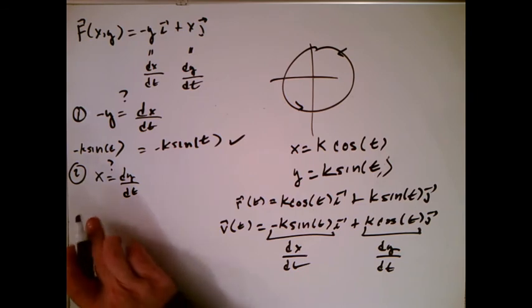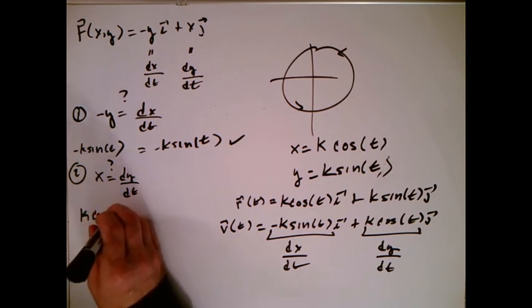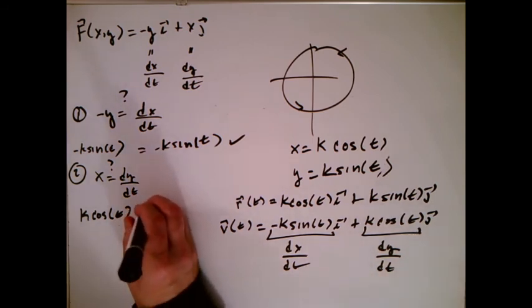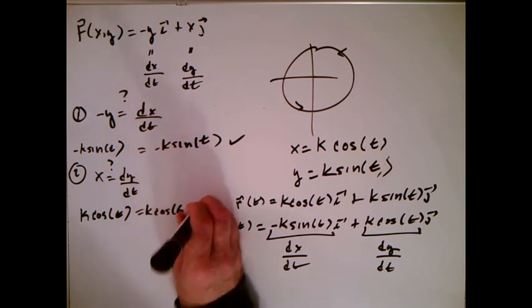x, for our parameterization, is k cosine t. So I walk my x over here like this. And dy dt, according to our derivative over here, is also equal to k cosine t. And so that checks.